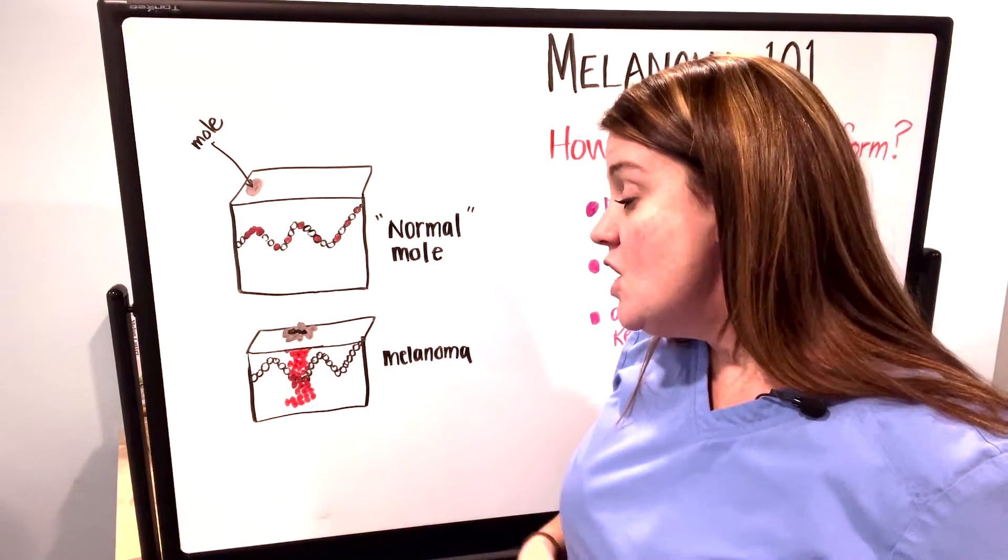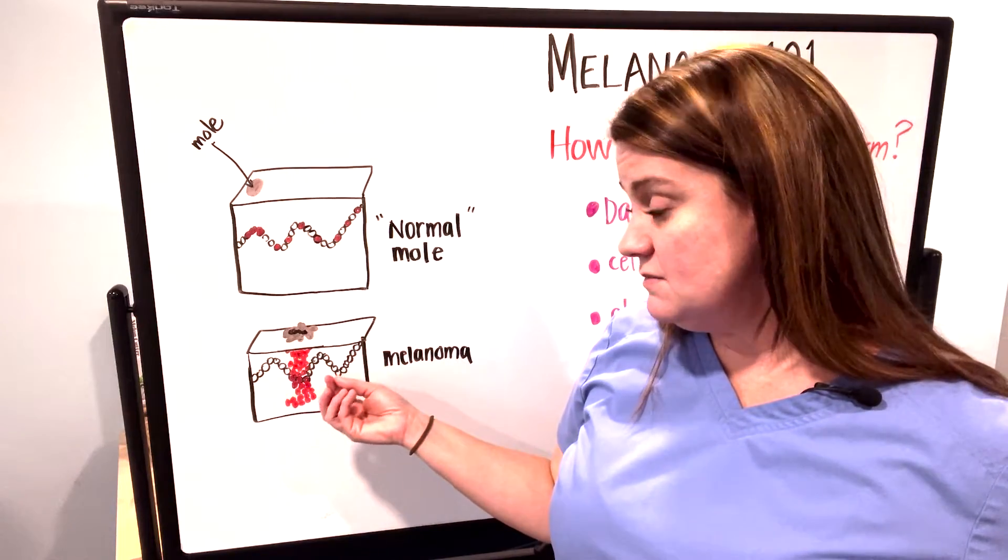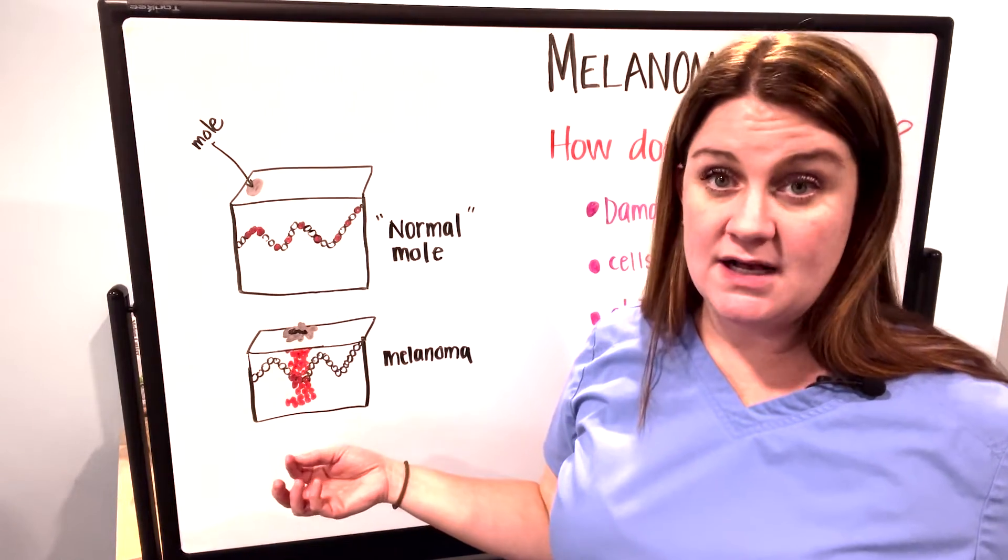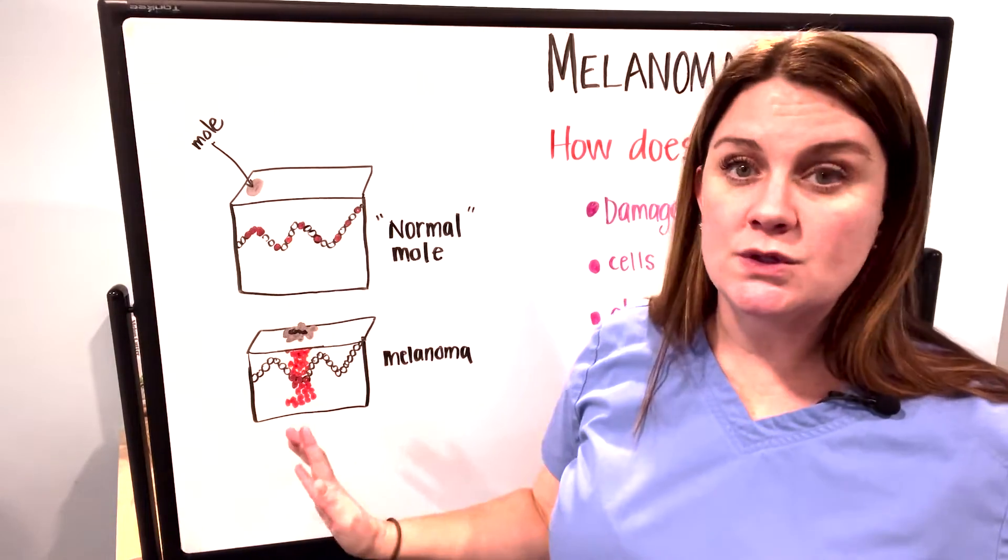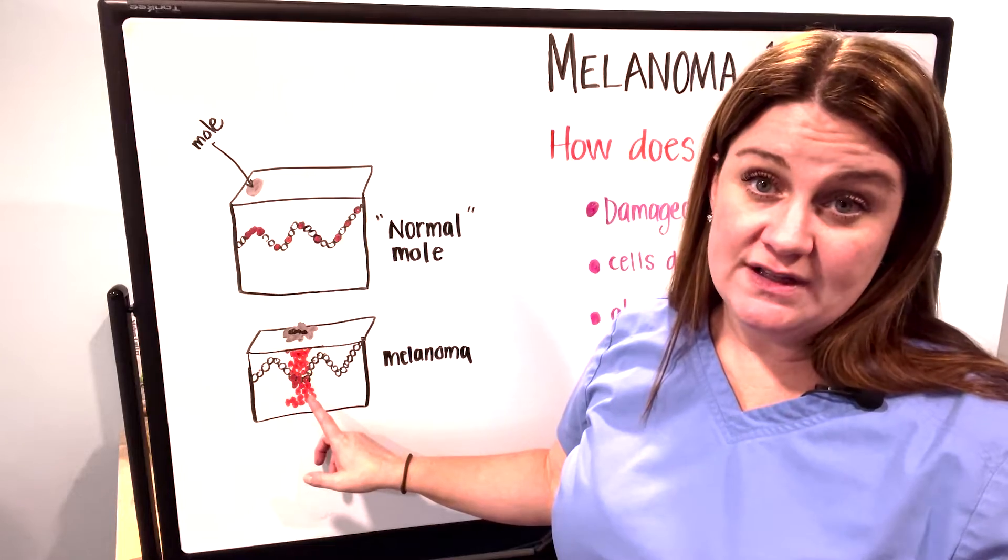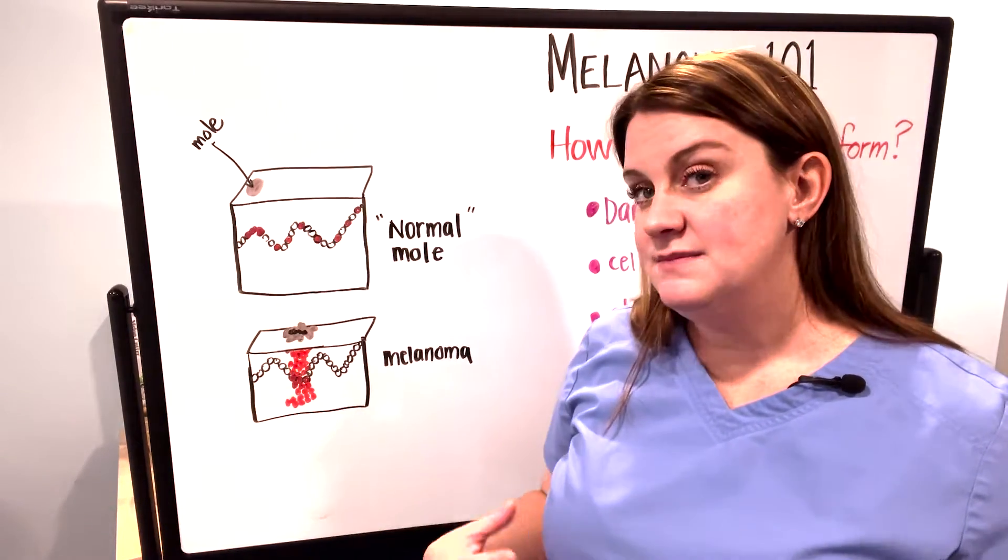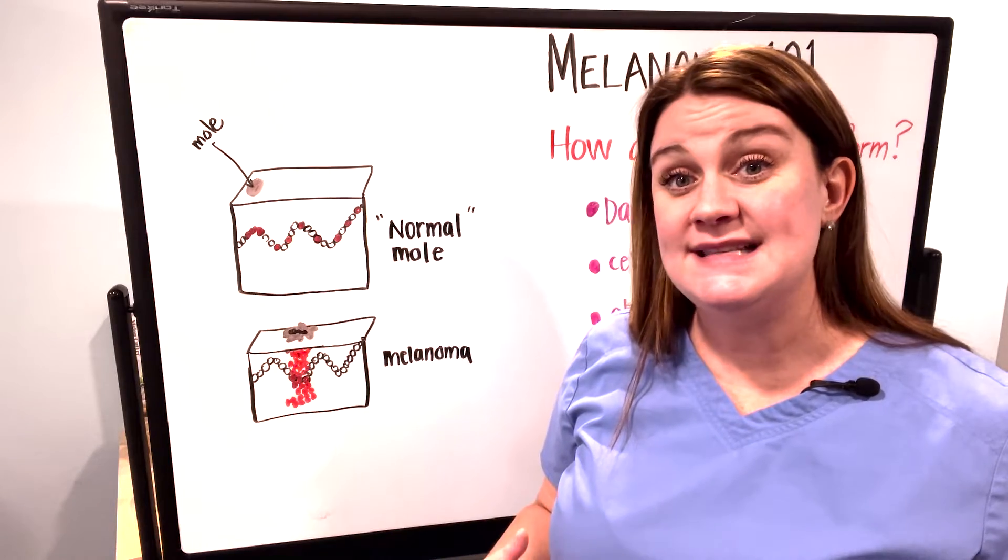However, when melanocytes don't grow normally because of DNA damage from whatever source—the most common being UV light—the cells become damaged. It actually damages the DNA.